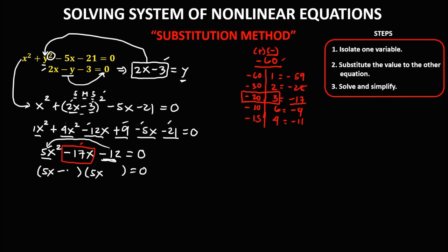So the factors are negative 20 and positive 3. We simplify: since 5 and 20 are both divisible by 5, we divide to get x minus 4. Then the second factor is 5x plus 3 equals 0. These are the factors of the quadratic equation.